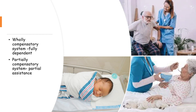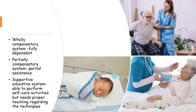Those who need partial assistance are included in the partially compensatory system. For example, a person with one-sided weakness can ambulate on their own but needs support while standing. Someone with a minor surgery may perform self-care activities but needs assistance — for instance, they can brush their teeth but need someone to take them to the washroom.